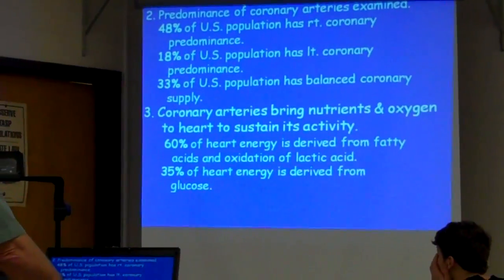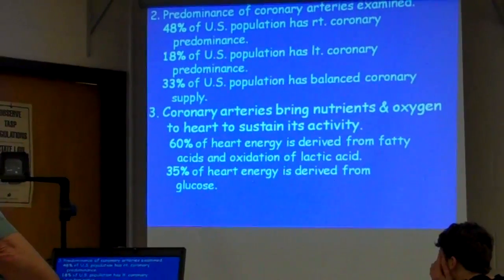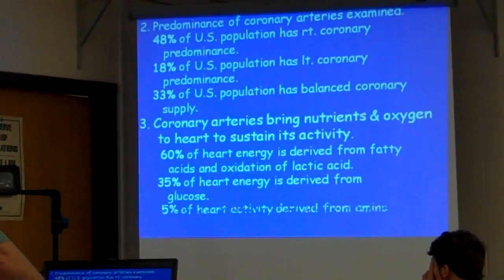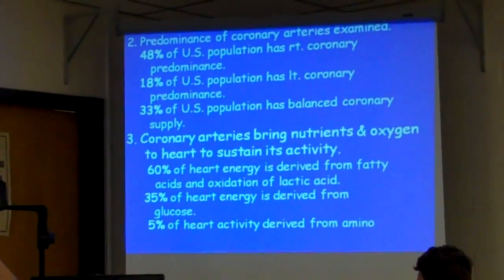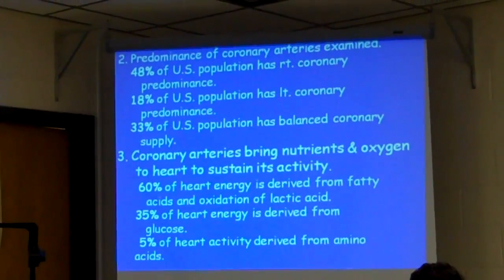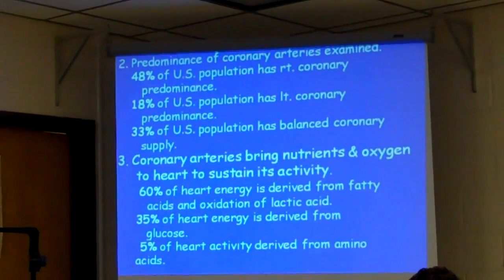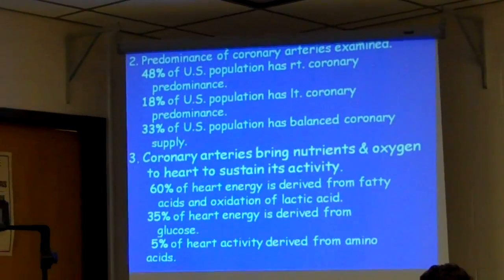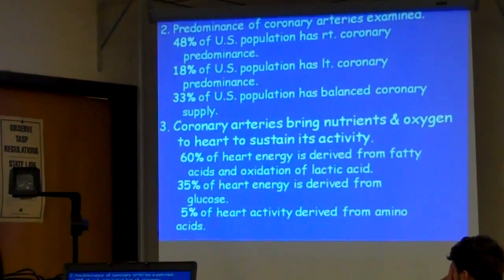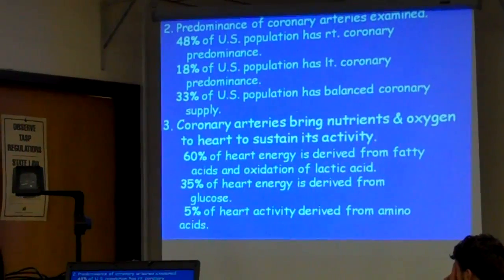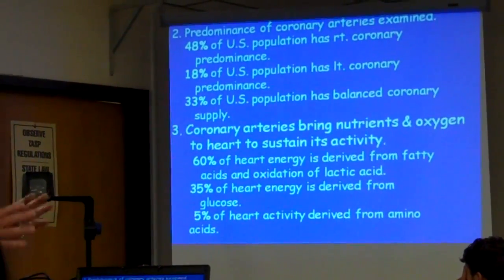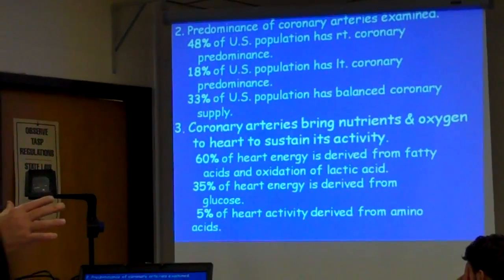35% of our energy is derived from glucose, so we still get a lot from glucose. And about 5% is derived from amino acids. Not much of our body depends on amino acids for energy — we don't get much energy from amino acids. Amino acids are used better to build more protein.